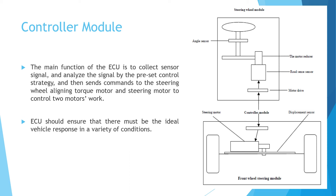Next is the controller module. The main function of the ECU is to collect sensor signals and analyze them by a preset control strategy, and then send commands to the steering wheel aligning torque motor and the steering motor to control the two motors' work. The ECU should ensure that there must be the ideal vehicle response in a variety of conditions.